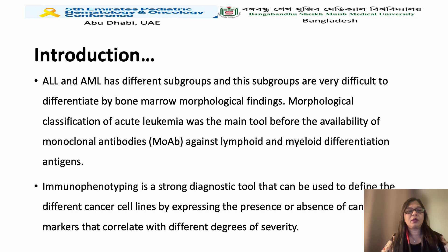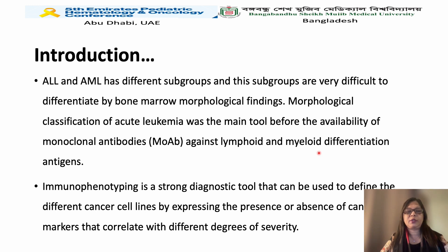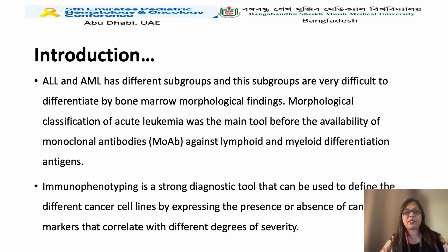Acute lymphoblastic leukemia and acute myeloid leukemia have different subgroups, and these subgroups are very difficult to differentiate by bone marrow morphological examination. Morphological examination of acute leukemia was the main tool before the availability of monoclonal antibodies against lymphoid and myeloid differentiation antigens. Immunophenotyping is a strong diagnostic tool that can differentiate different cancer cell lineages by expressing the presence or absence of cancer cell markers that correlate with different degrees of severity.